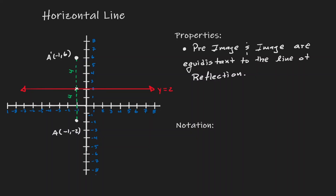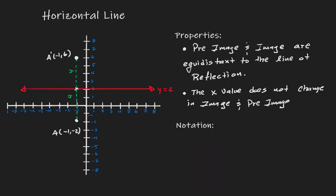Now that we know the distance, let's keep that same distance on the other side of the line. The second property to consider is that the x-value does not change, because we are only moving in a vertical direction — only the y-value changes. Also, if we consider the line segment connecting the image with the pre-image, that line segment will always be perpendicular to the line of reflection.